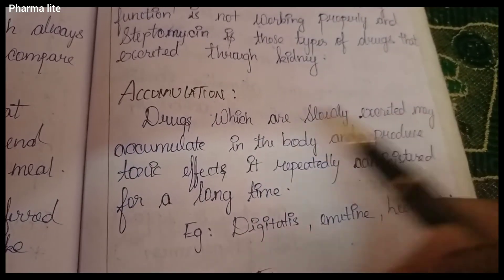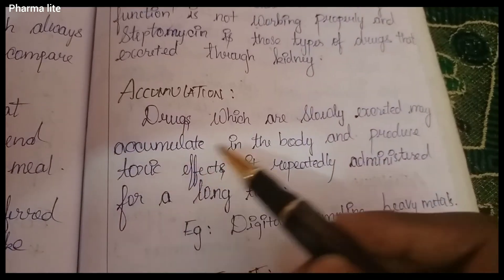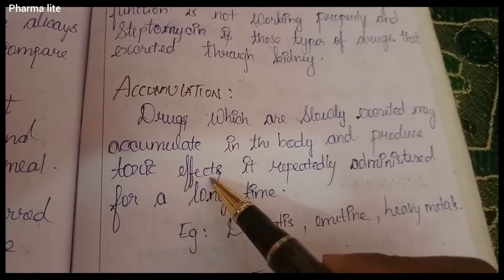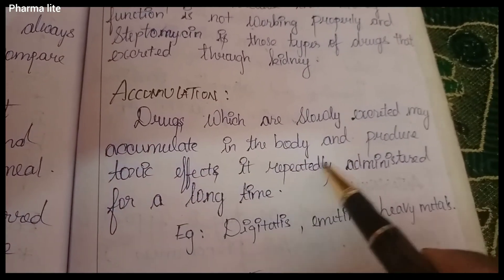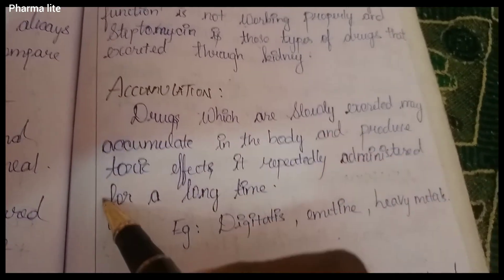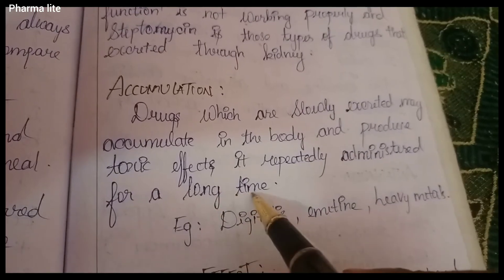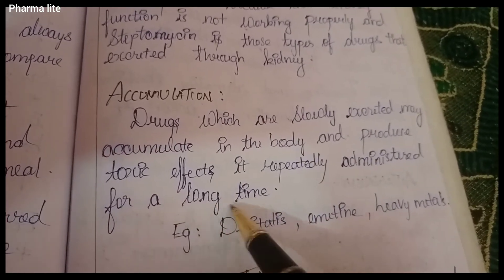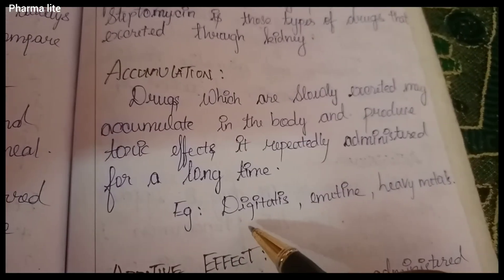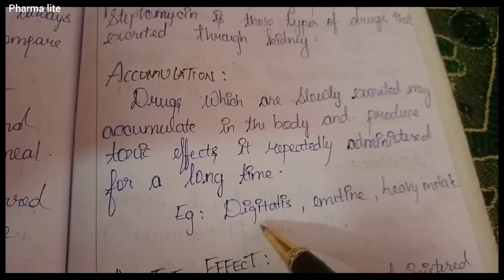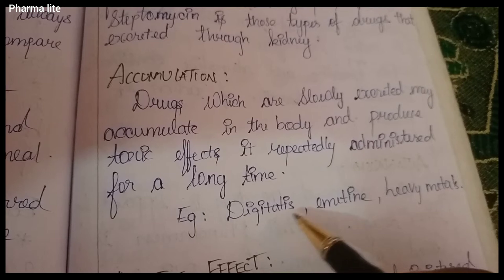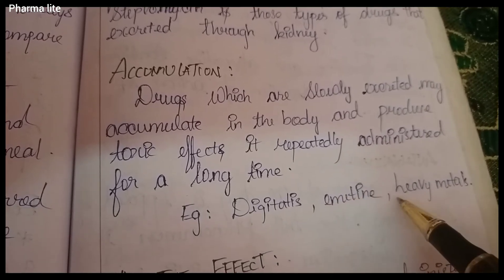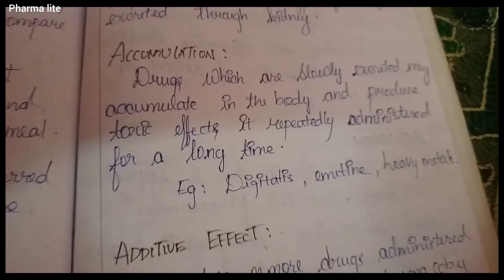Accumulation. When a drug is repeatedly administered over a long time, it can accumulate in the body. Examples of drugs that accumulate include digitalis, emetine, and heavy metals.